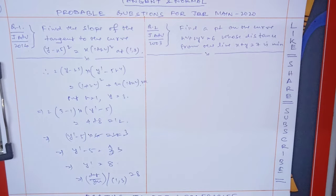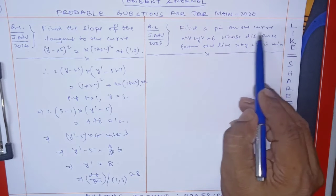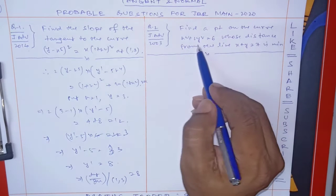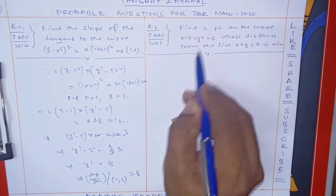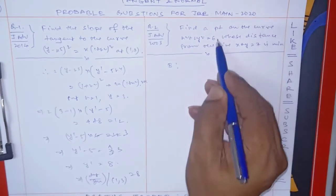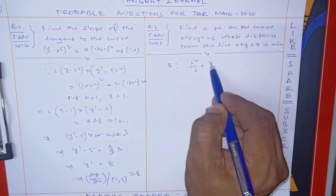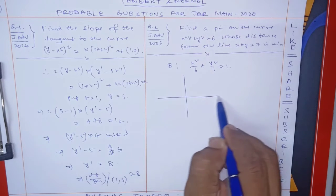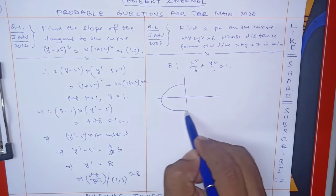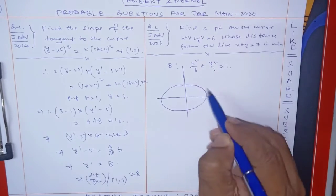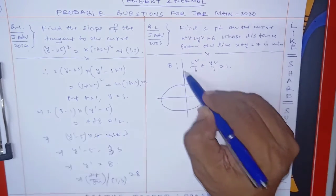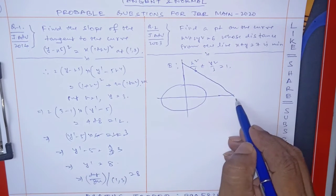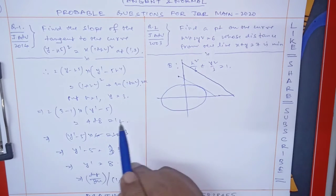Another question: find a point on the curve whose distance from the line is minimum. The given curve is actually an ellipse. Dividing by 6: x²/6 + y²/3 = 1. This is a horizontal ellipse. The line given is x + y = 7.